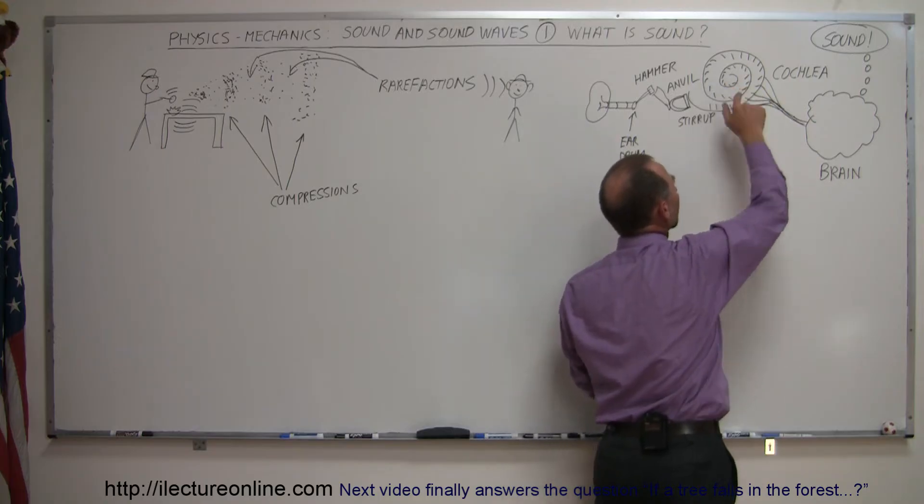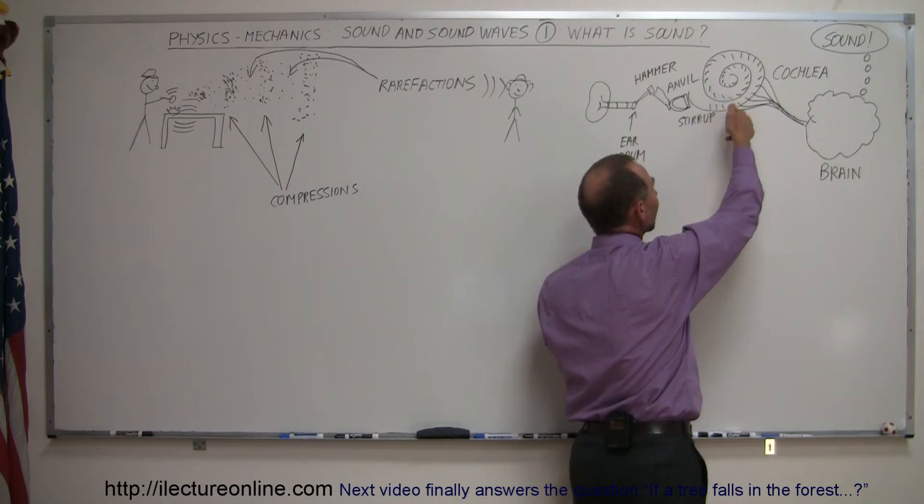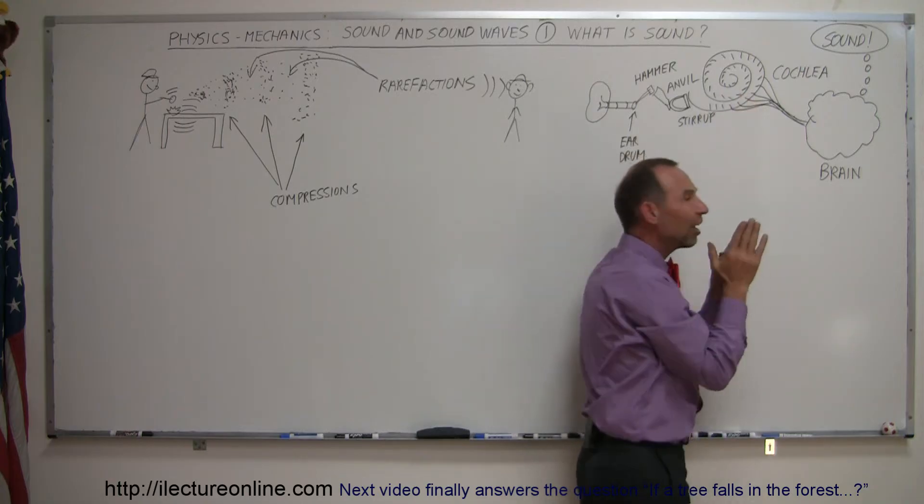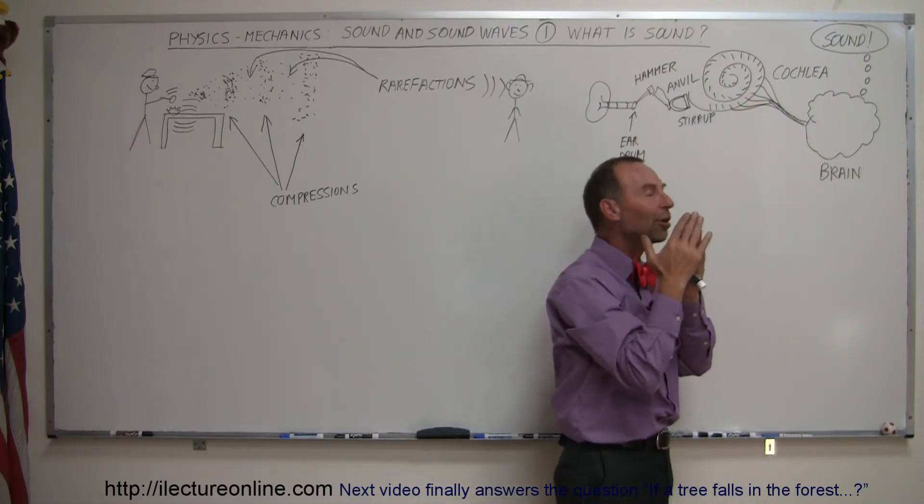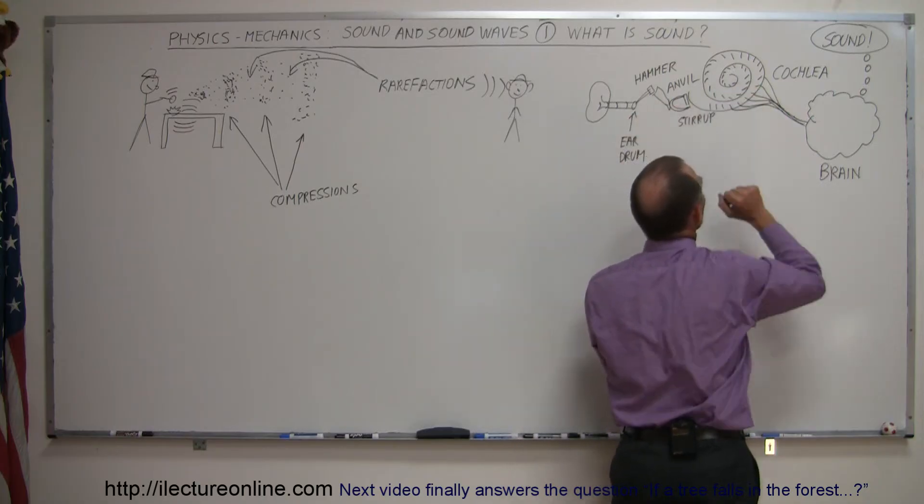But inside this cochlea, which like a shell has fluid in it, there are these little cilia, these little hairs. And these hairs are very sensitive to vibrations in the fluid, which are carried through all this through the anvil into the cochlea.